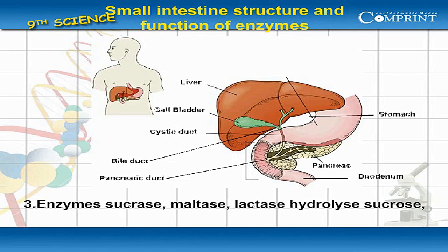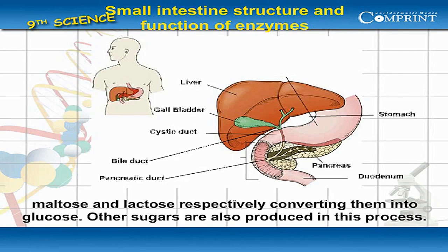Enzymes sucrase, maltase, and lactase hydrolyse sucrose, maltose, and lactose respectively, converting them into glucose. Other sugars are also produced in this process.